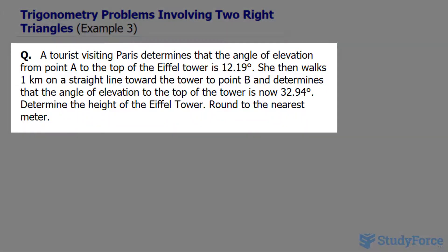The question reads: a tourist visiting Paris determines that the angle of elevation from point A to the top of the Eiffel Tower is 12.19 degrees. She then walks one kilometer on a straight line to point B and determines that the angle of elevation to the top of the tower is 32.94 degrees. Determine the height of the Eiffel Tower and round to the nearest meter.